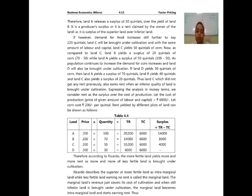If demand for food increases further to say 220 quintals, land C will be brought under cultivation with the same amount of labour and capital. Land C yields 50 quintals of corn. Now, as compared to land C, land B yields a surplus of 20 quintals (70 minus 50), while land A yields a surplus of 50 quintals (100 minus 50). As population continues to increase, land D is also brought under cultivation. If land D yields 30 quintals, then land A yields a core surplus of 70 quintals, land B yields 40 quintals, and land C also yields a surplus of 20 quintals — earning rent when inferior quality land is brought under cultivation. Expressing the analysis in money terms, rent is considered a surplus over the cost of production.